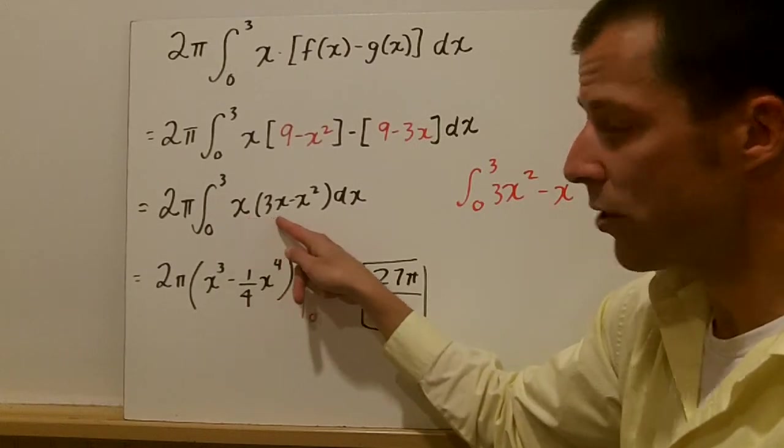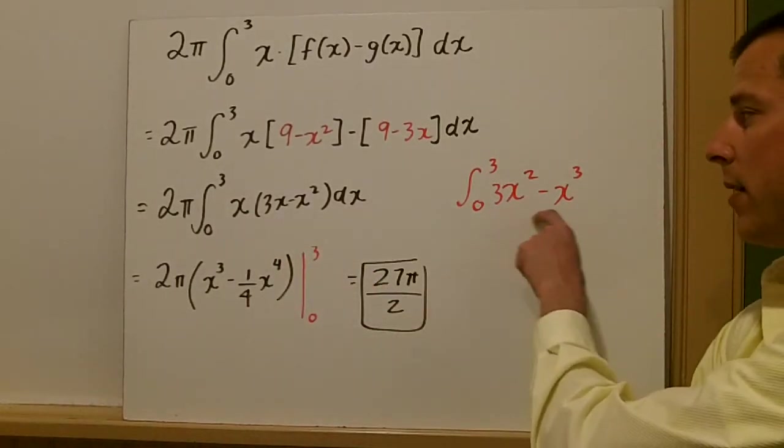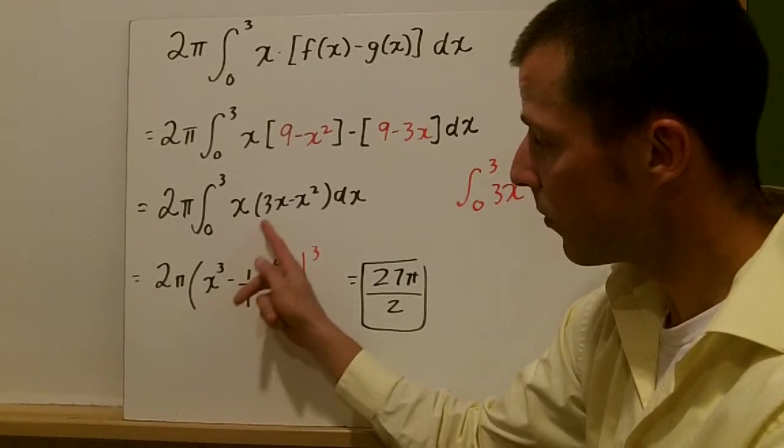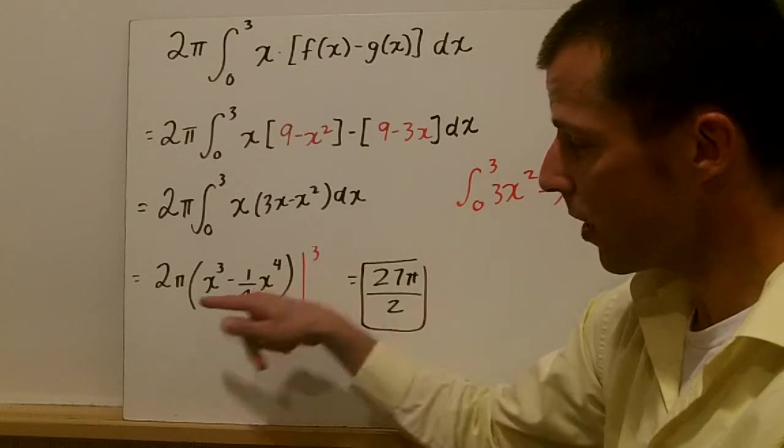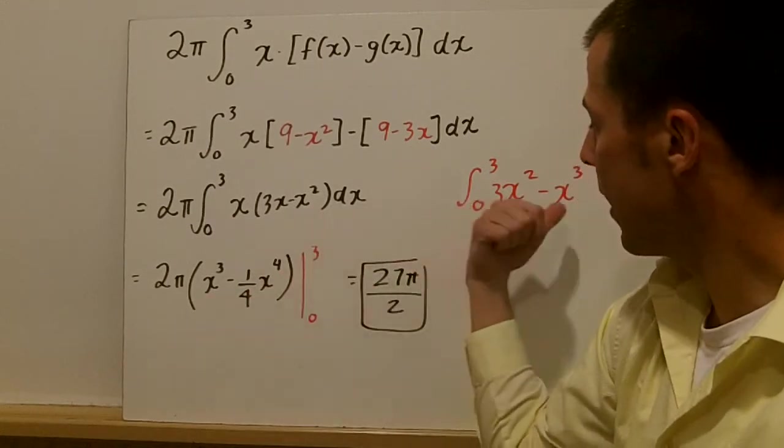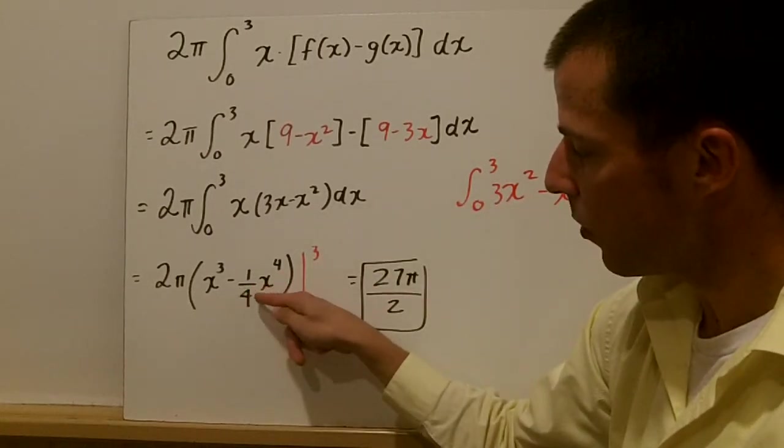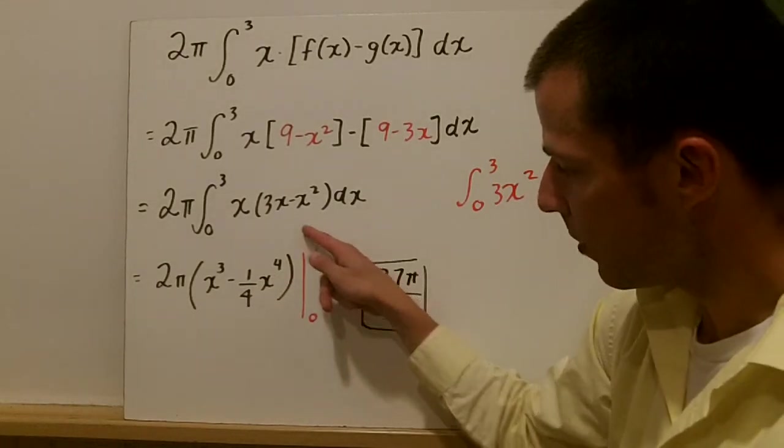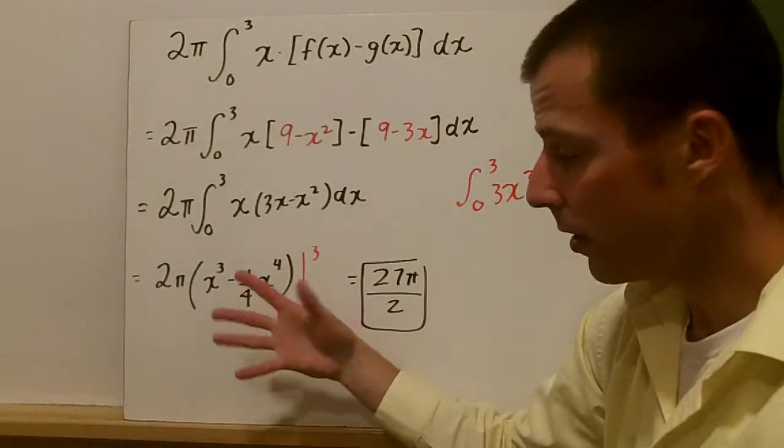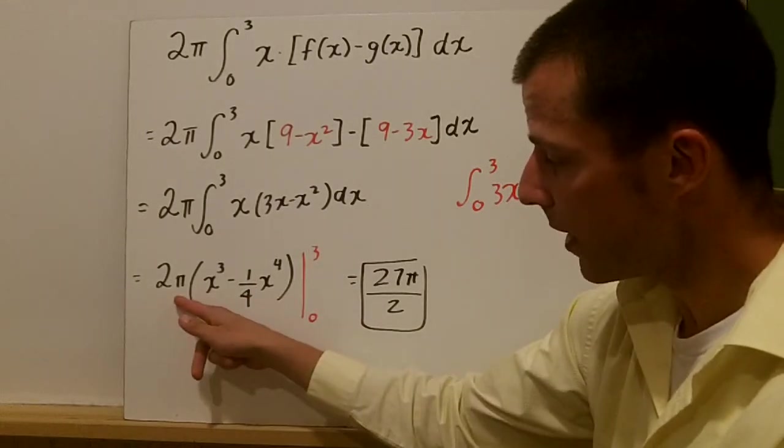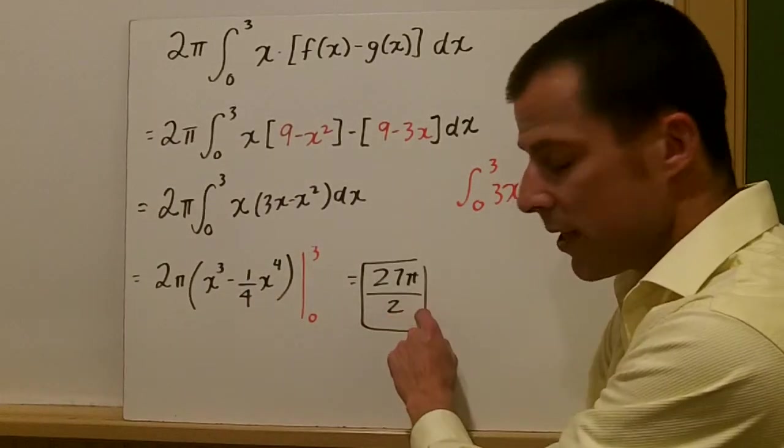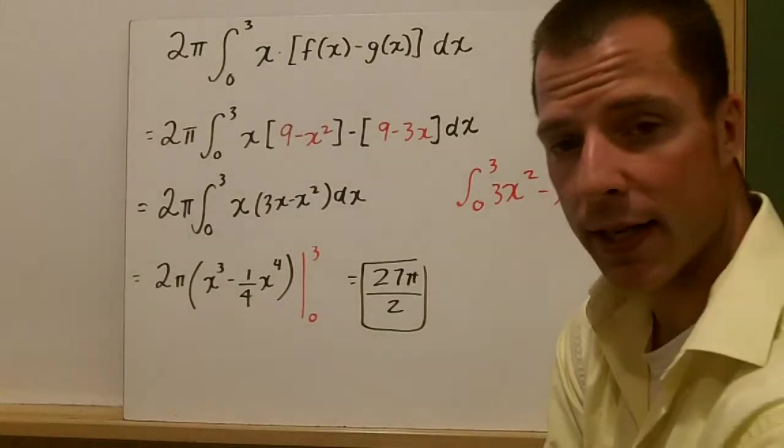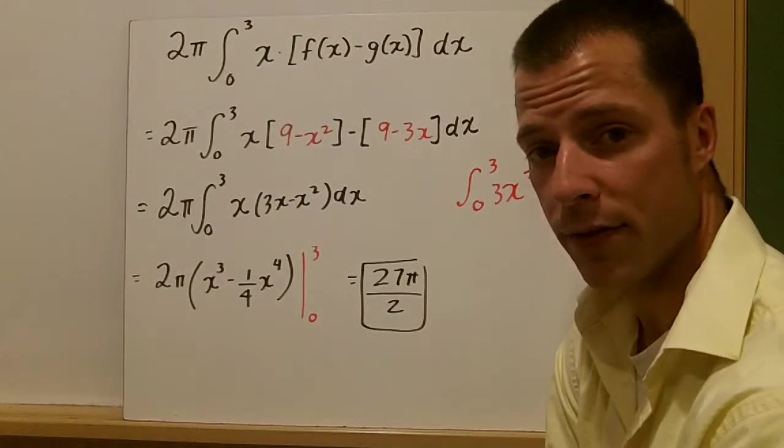Now you distribute the x through, and we do that here in red, and we're going to integrate from 2π. We integrate 3x squared, which is just x cubed. x cubed is minus 1 fourth x to the fourth, and we're going from 0 to 3. You plug 3 in for each x, you get a number, and you multiply that by 2π, and we get 27π over 2. We do not plug 0 in for x, because then we'd just be subtracting off 0.